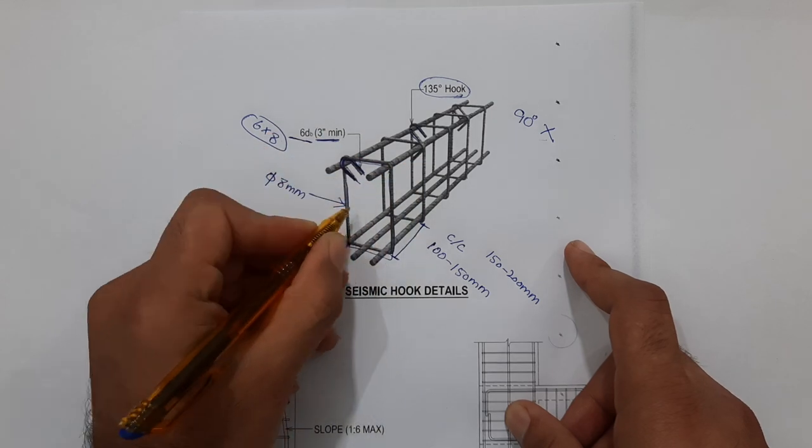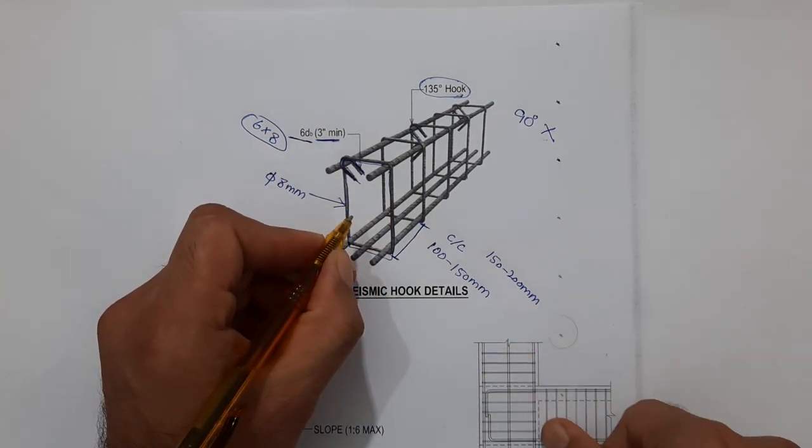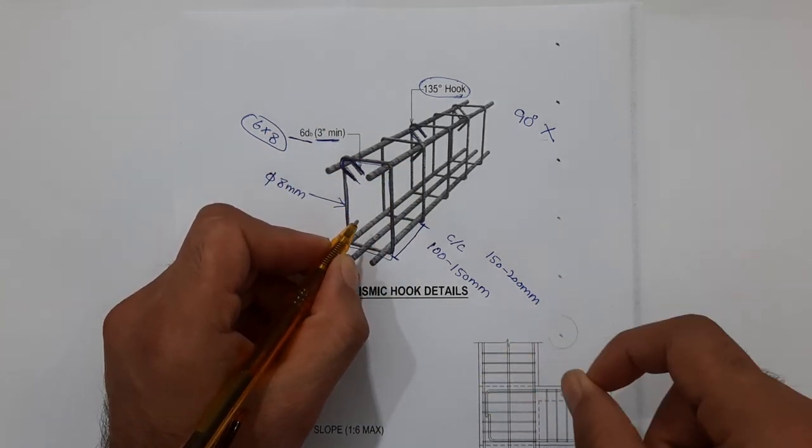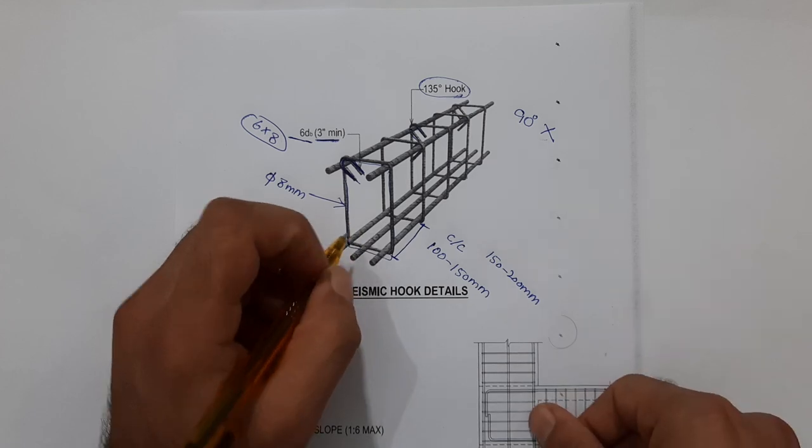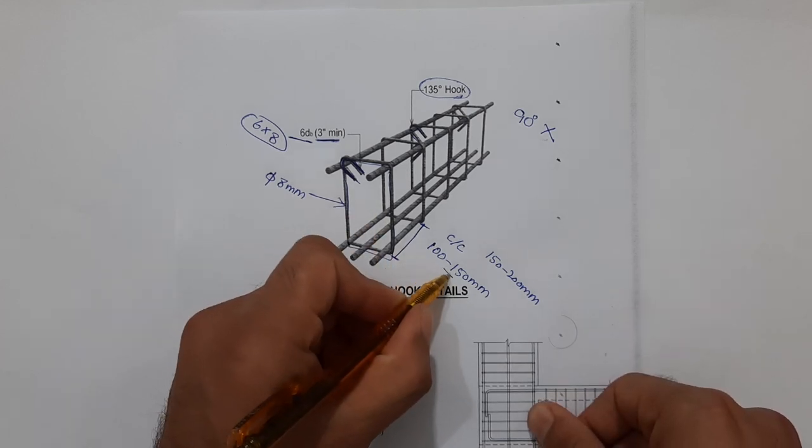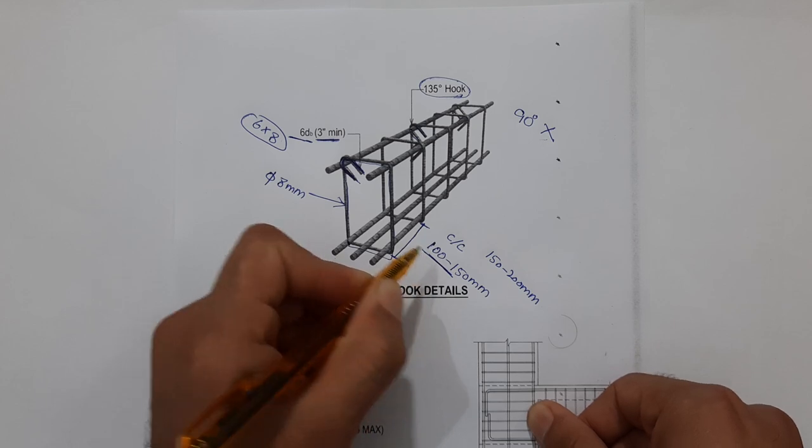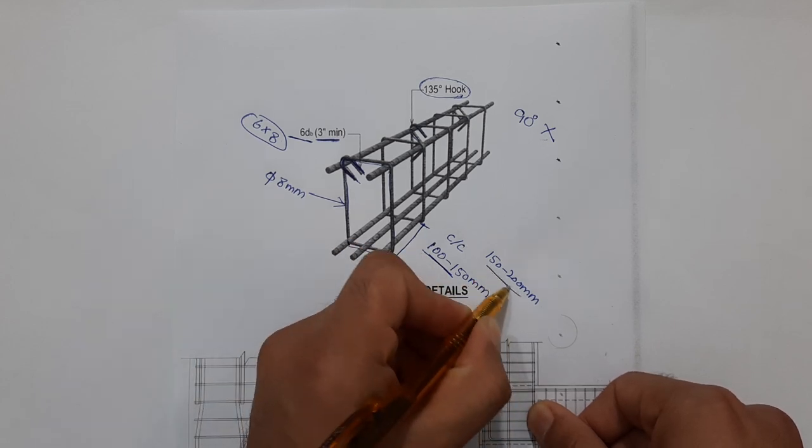Because at the end of the support we have maximum shear stresses, the spacing should be minimum at the end to avoid maximum shear stresses. But at the mid it should be from 150 to 200 millimeters.